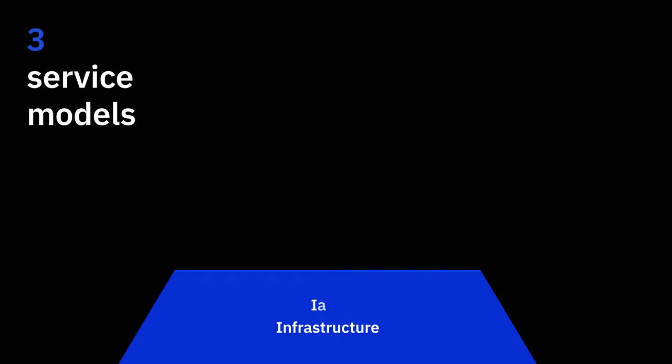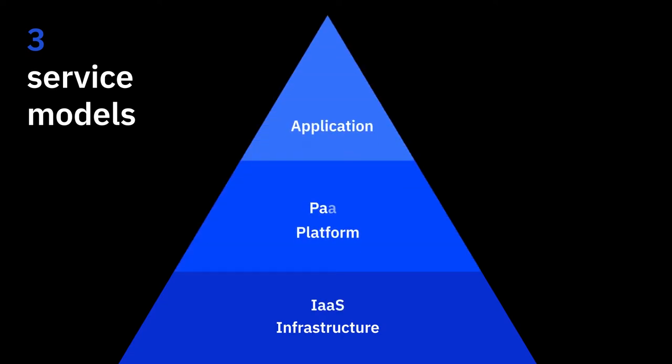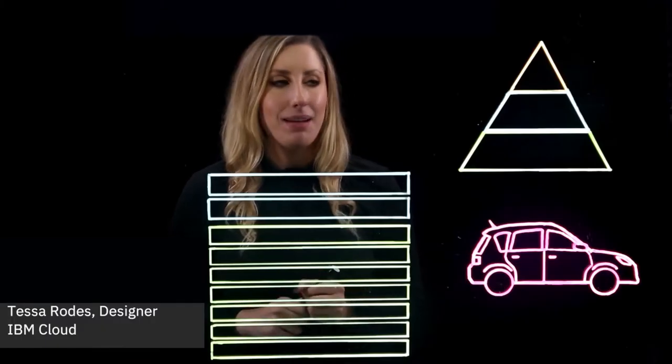In our introductory cloud video, we briefly talked about the three service models available on the cloud: Infrastructure as a Service, Platform as a Service, and Software as a Service. Before we dive into the details of each of these service models in subsequent videos, let's get started with a quick overview of these models.